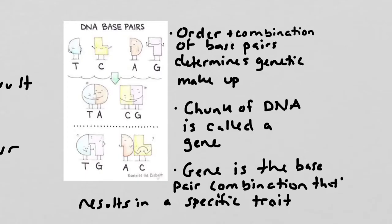In DNA, adenine always pairs with thiamine, and cytosine always pairs with guanine, so A and T and C and G. And the order and combination of base pairs determines what we call the genetic makeup of an organism. A chunk of the DNA double helix is often called a gene, and the gene is the base pair combination that results in a specific trait.